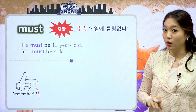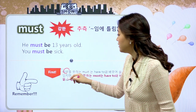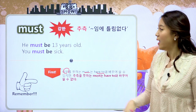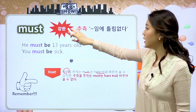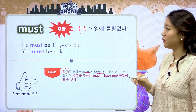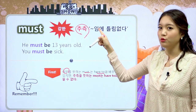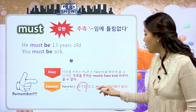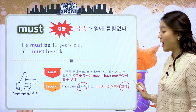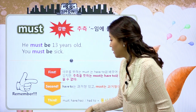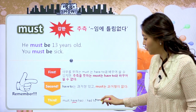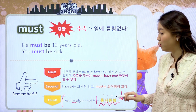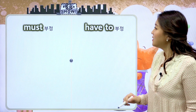기억해야 되는 것들 몇 가지를 선생님이 다시 짚어주도록 할게요. 의무를 뜻하는 must는 have to와 바꿔 쓸 수 있지만 추측을 뜻하는 must는 바꿔 쓸 수 없다라고 했는데, must는 두 가지 뜻이 있었죠 — 뭐뭐 해야 한다, 추측. have to는 한 가지밖에 없었어요. 뭐뭐 해야 한다밖에 없었기 때문에 추측일 때는 have to와 바꿔 쓸 수 없습니다. 두 번째는 have to는 과거형이 있고 must는 과거형이 없다. 세 번째로 must, have to, has to 등 조동사 다음에는 동사원형이 와야 됩니다.